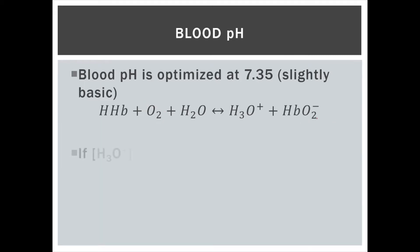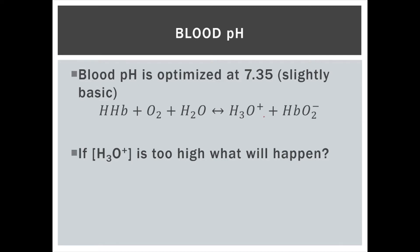If the H₃O⁺ concentration is too high — using Le Chatelier's principle — if this concentration is too high, meaning we have a very acidic bloodstream, the reaction will shift equilibrium this way, releasing more oxygen into the bloodstream. The main concern here is that the amount of the hemoglobin structure goes down, so your blood actually has a lower capacity to carry oxygen to the parts where it's needed.